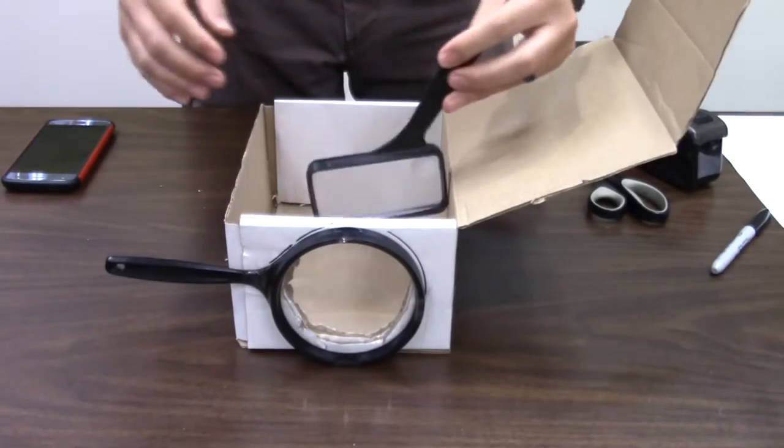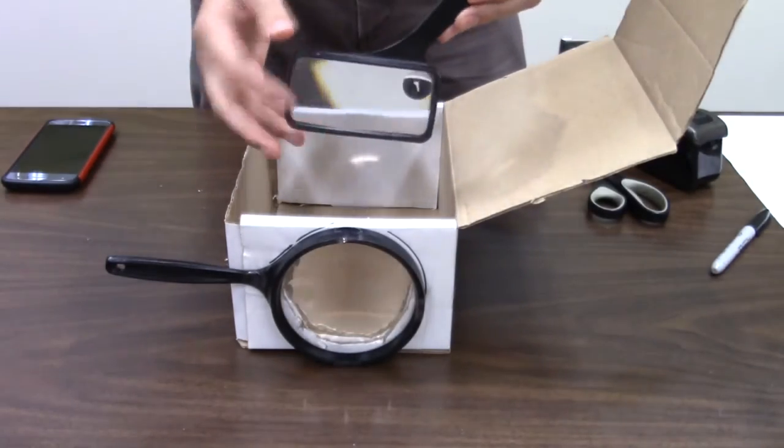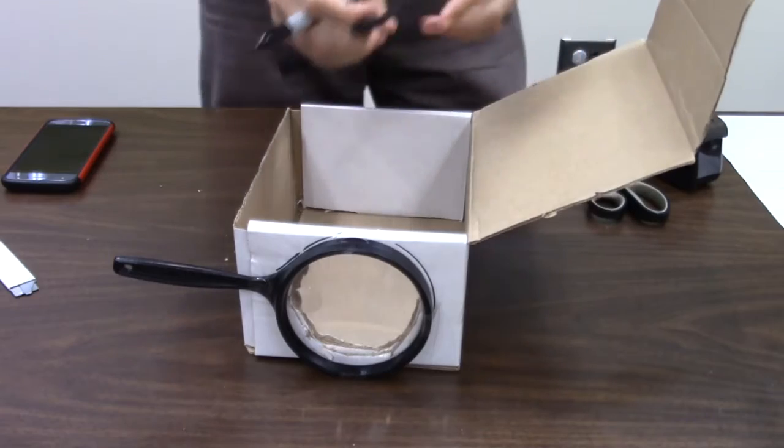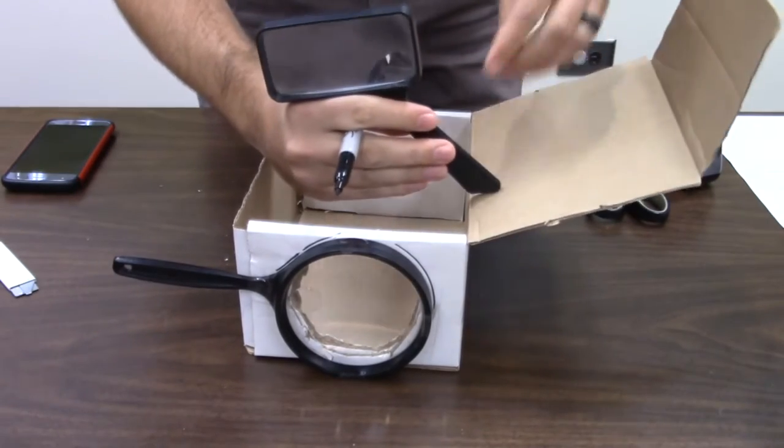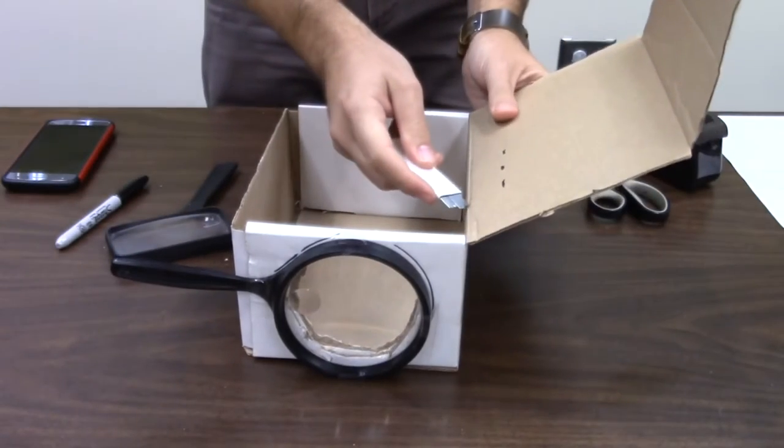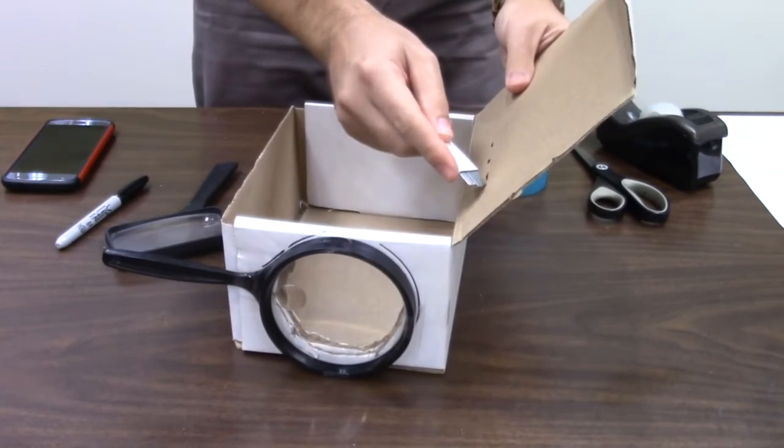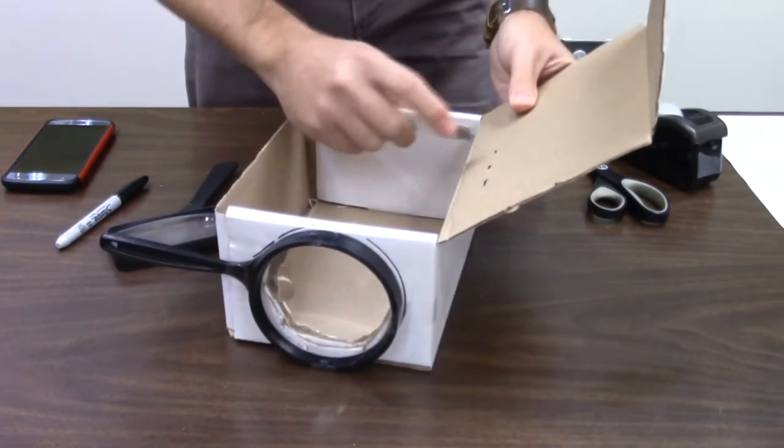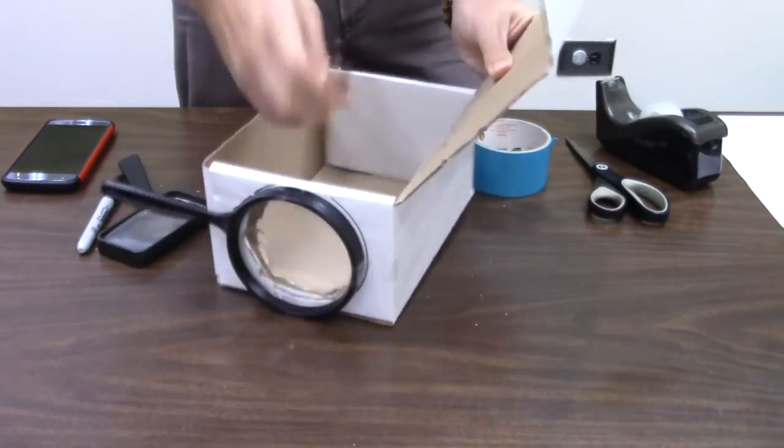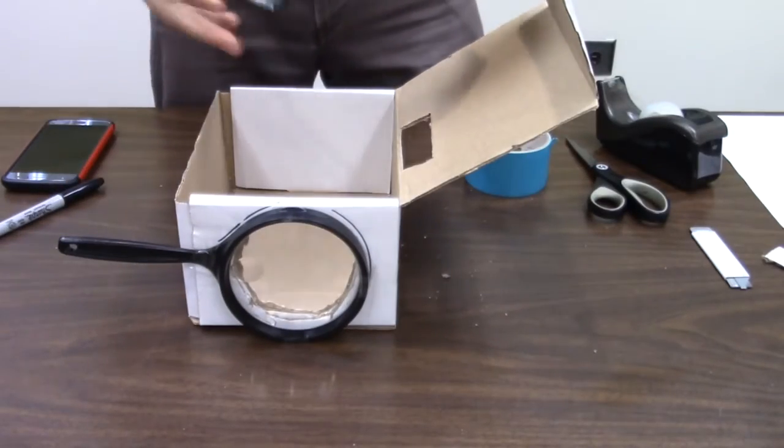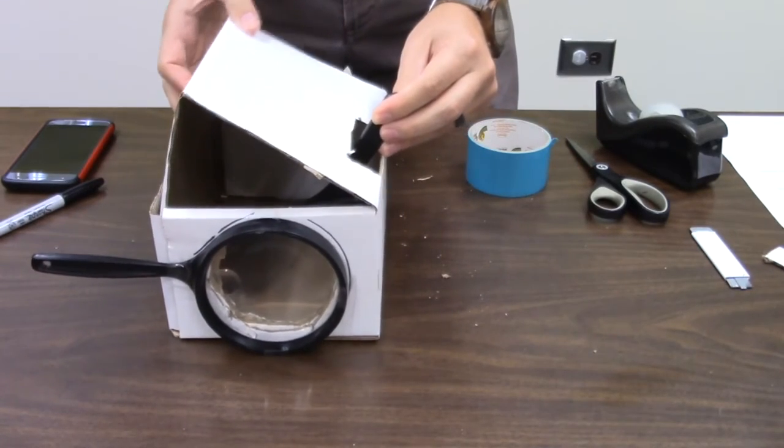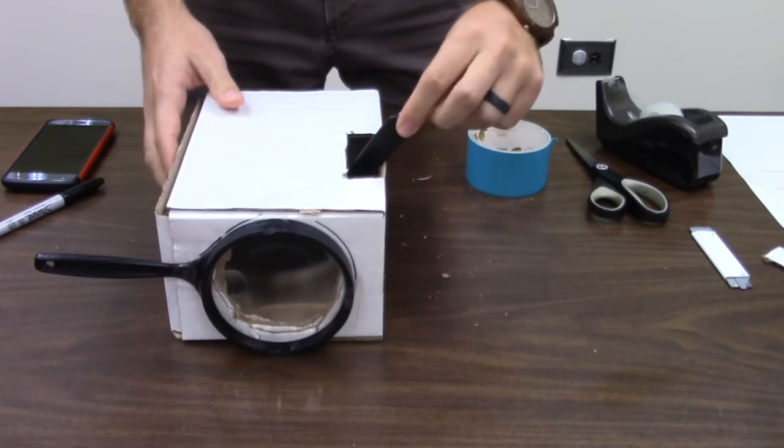Next, you're going to take your other magnifying glass. And don't worry if you don't have a rectangular one. A round one will work just fine. You're going to take your other magnifying glass. You want to hold the end of the handle up here. And you're going to mark about how wide it is. And now you're going to cut a slot along this lid. The width of that handle. And this is what we're going to use to focus our projector. So, now we should be able to put this magnifying glass through the lid.